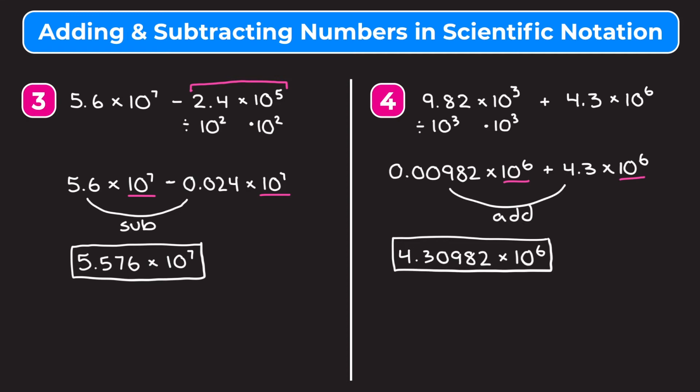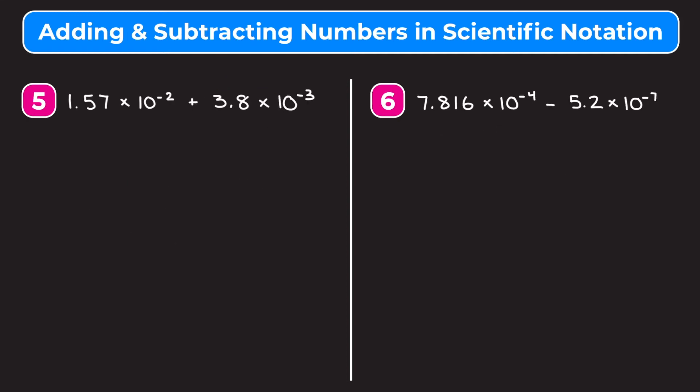Let's go through some examples that have negative exponents. Example 5 is 1.57 times 10 to the negative second plus 3.8 times 10 to the negative third. I want to raise my smaller exponent — negative three — up to the bigger exponent of negative two. To get from 10 to the negative third to 10 to the negative second, I have to multiply by 10 to the first, which means I have to divide 3.8 by 10 to the first. Moving the decimal point one place to the left gives me 0.38, and 10 to the negative third times 10 to the first is 10 to the negative second.